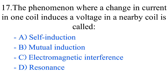Question number 17. The phenomenon where a change in current in one coil induces a voltage in a nearby coil is called: option A, self-induction; option B, mutual induction; option C, electromagnetic interference; option D, resonance. The correct answer is option B, mutual induction.